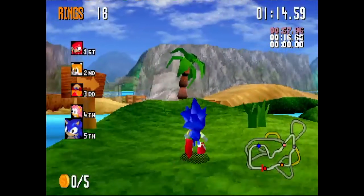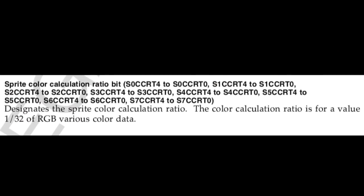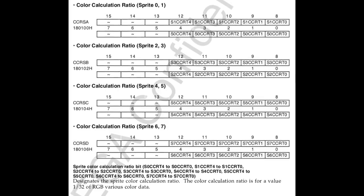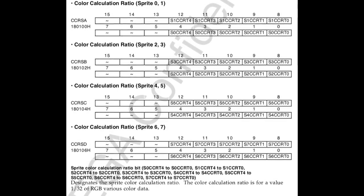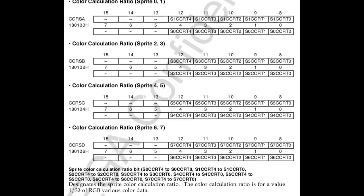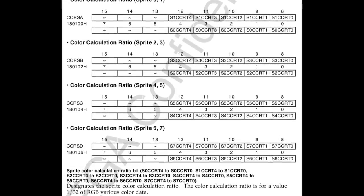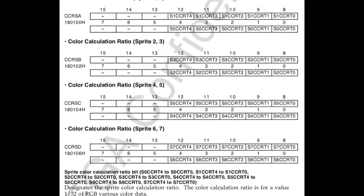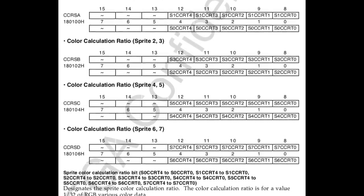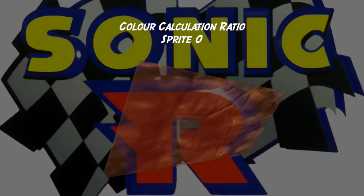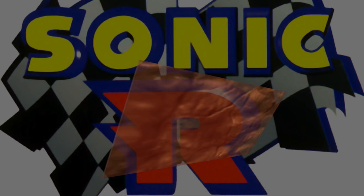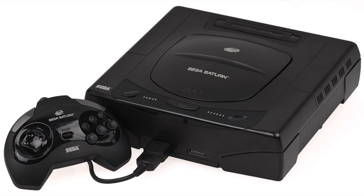Well, I was intrigued by a section of the Saturn hardware registers referred to as colour calculation ratio for sprites. In short, it allowed you to set a kind of mix ratio for how the finished sprite would be drawn over the background graphics. This didn't affect how sprites draw over each other, just the background, but for a fade this seemed perfect. You could set up to 8 mix ratios, so in theory I could have an 8-step fade for the objects. However, hardware problems struck again.